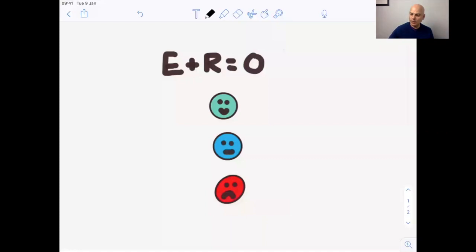So when I work with people, I talk about this formula E plus R equals O, where E is the event, R is the response, and O is the outcome.